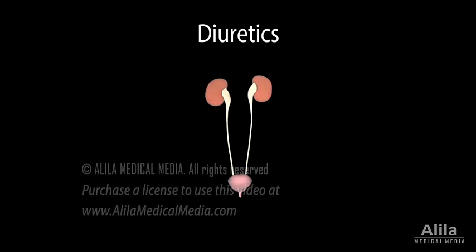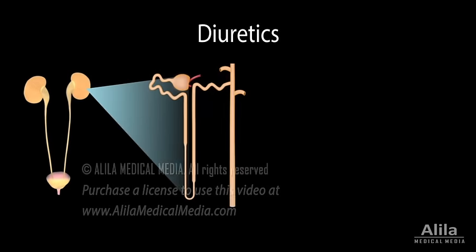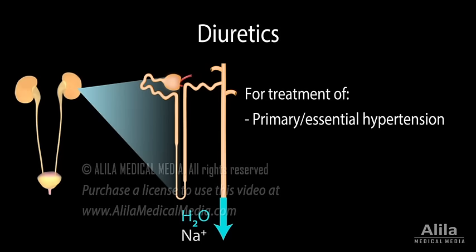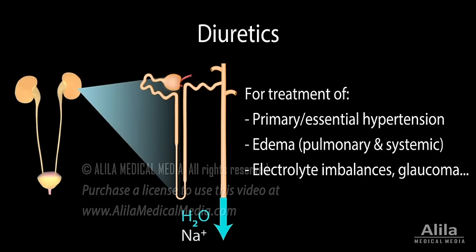Diuretics are substances that increase production of urine. Most diuretics act to increase excretion of sodium, which is followed by water. Because increased urine production results in reduced blood volume, diuretics are commonly used to treat primary hypertension and edema. Changes in body fluid and electrolytes induced by diuretics can also be therapeutic for some other conditions.